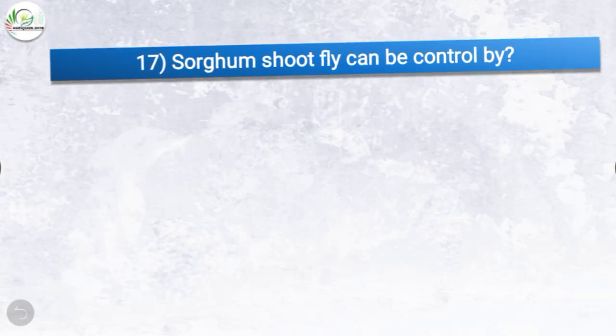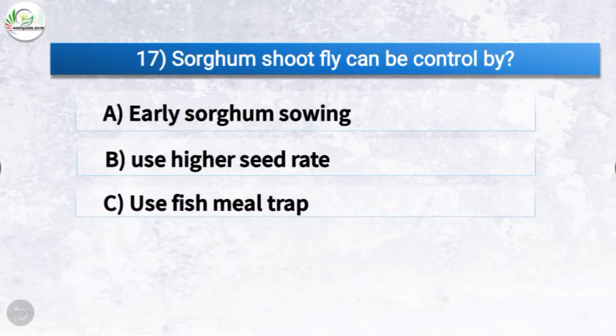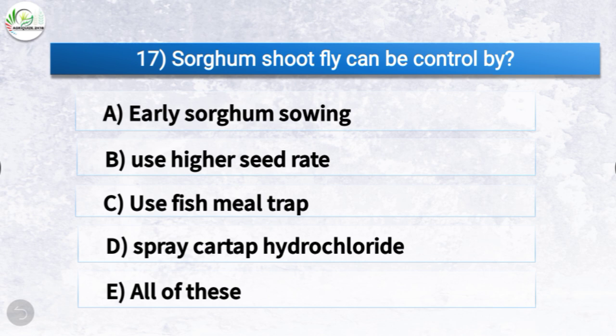Question number seventeen: sorghum shoot fly can be controlled by which method? The options are early sorghum sowing, use of higher seed rate, use of fish meal trap, spray of Cartap hydrochloride, or all of these. The correct answer is option E, all of these. So sorghum shoot fly can be controlled by early sorghum sowing, using higher seed rate, using fish meal trap, and spraying Cartap hydrochloride.